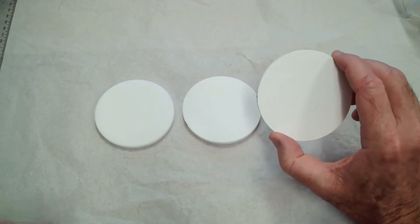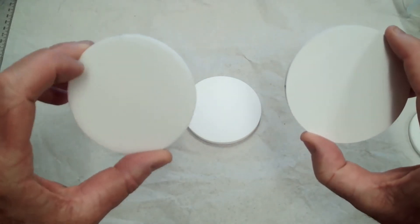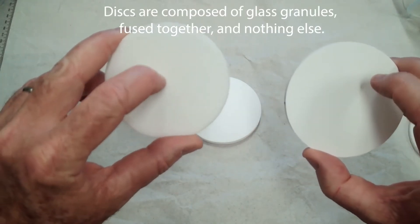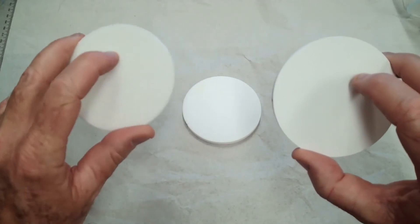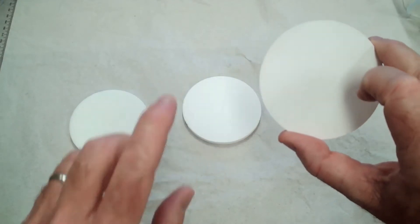You can kind of see that the granule size is somewhat different. The coarse has larger granules, and the fine looks really smooth.